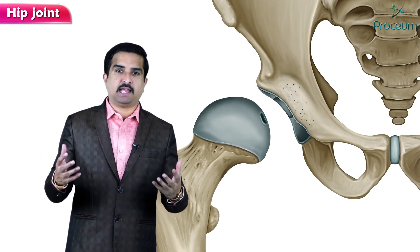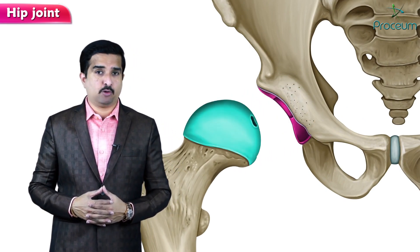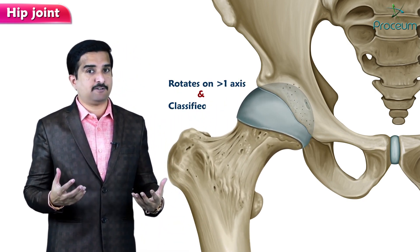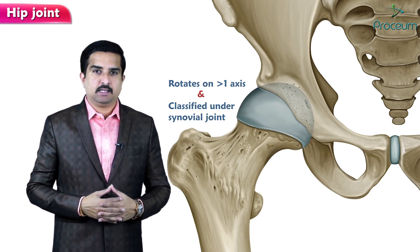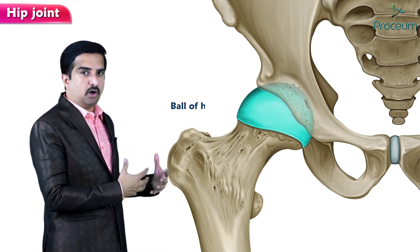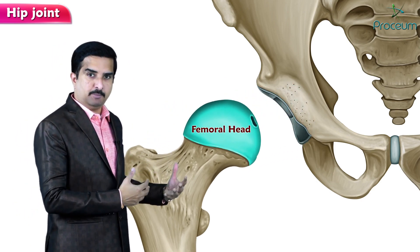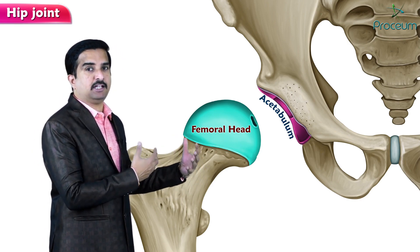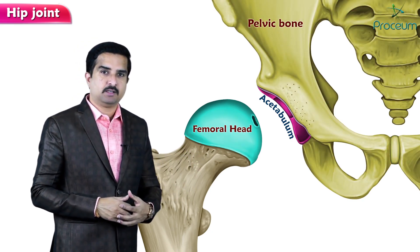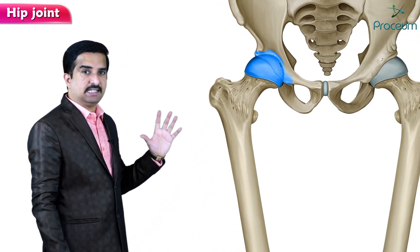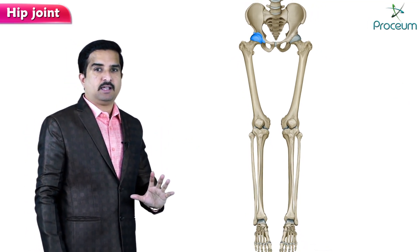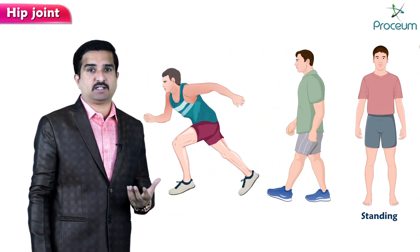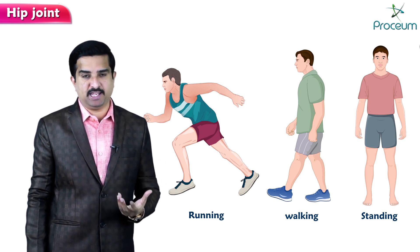The hip joint is formed like a ball and socket, therefore it is called a ball and socket joint, which rotates on more than one axis and is classified under synovial joint. The ball of the hip joint is comprised of the head of the femur, which articulates with the acetabulum — a cup-like depression within the pelvic bone. The hip joint connects the axial skeleton to the lower extremities and functions to support static (standing) and dynamic (walking, running) weight-bearing activities.